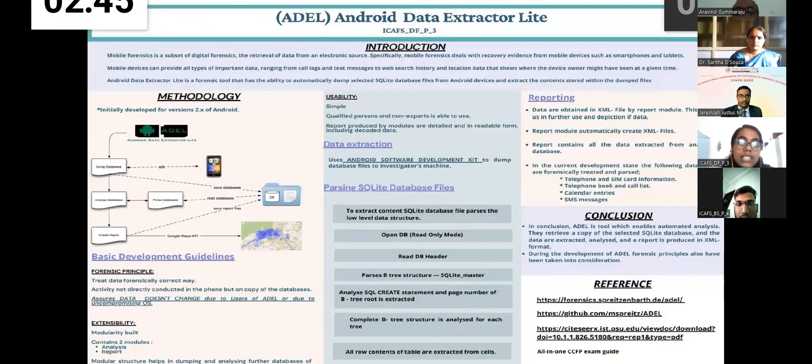Data extraction. In order to extract the data, the application uses a software called Android Software Development Kit. Here, it contains Android Debug Bridge which helps in connecting the Android device and we are able to execute commands on it. The next part is the parsing of SQLite database files. And these database files can be the call logs or SMS messages or even the calendar entries in the phone. So, in order to extract these data, they need to extract the SQLite database file. They have to go into the low-level data structure.